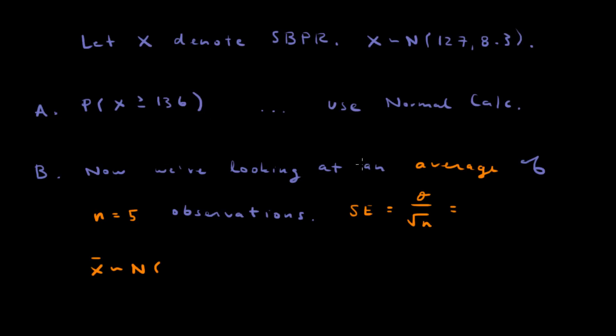In question B, we're looking at an average of 5 observations. So anytime you're looking at an average, you have to calculate the standard error. So for just one observation, you can use the standard deviation. If you're looking at an average of 5 observations, or an average of any number of observations, that's when you want to calculate the standard error.